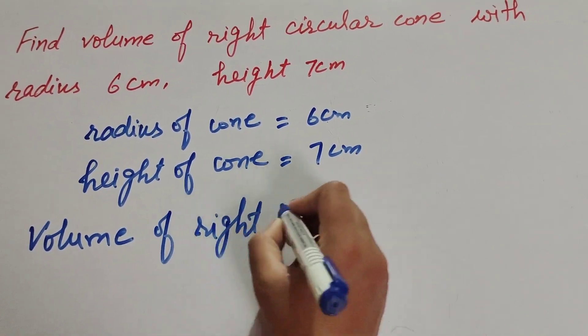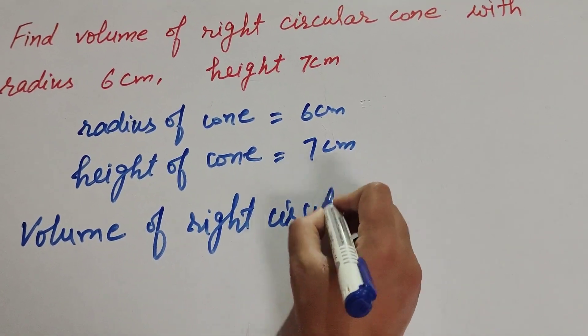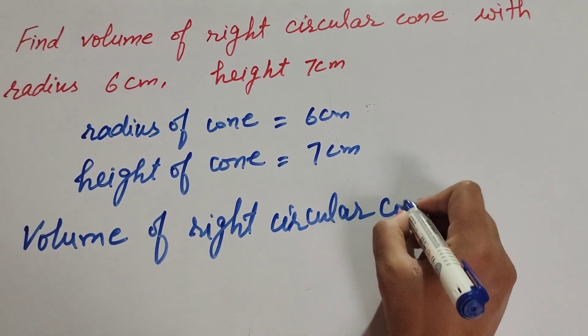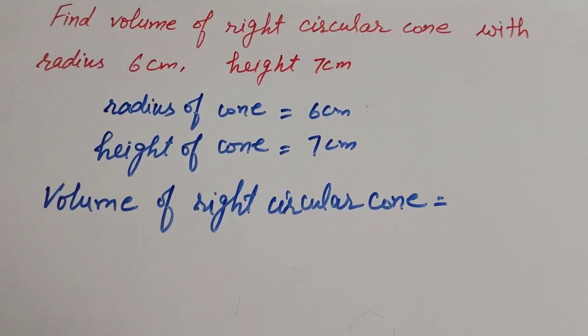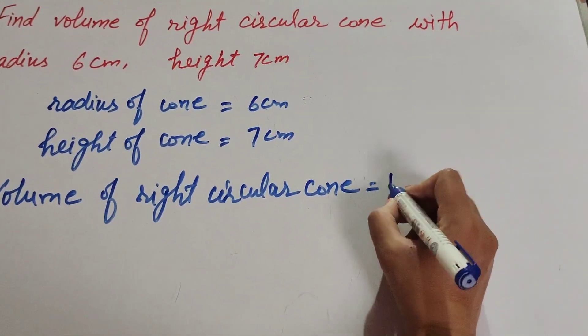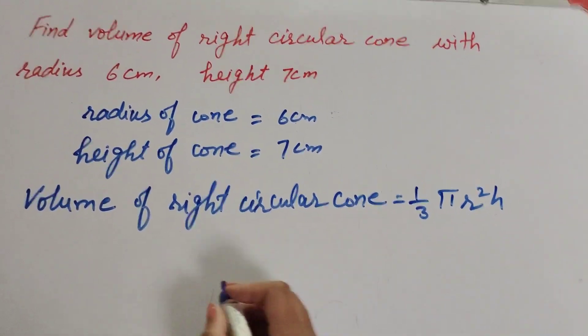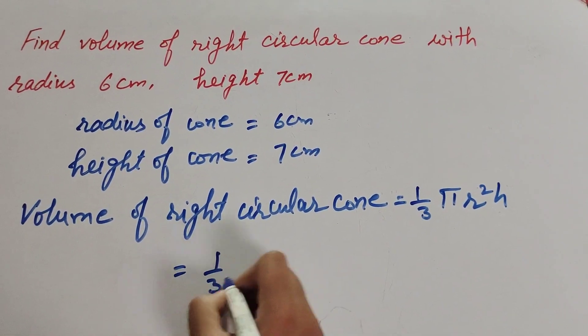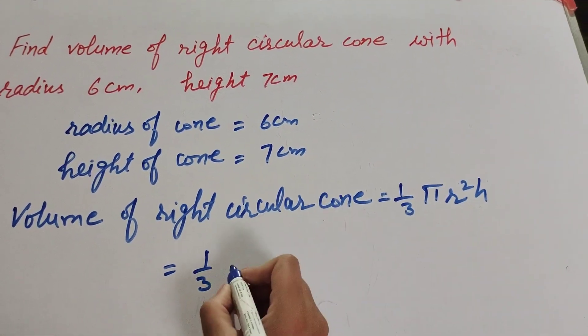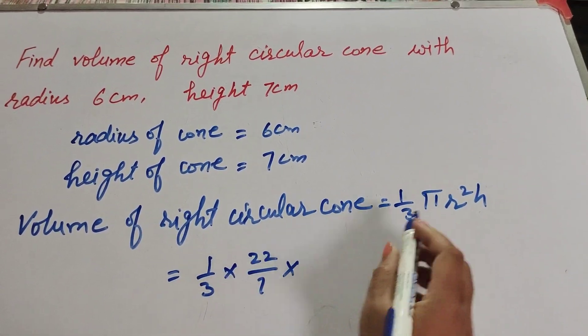circular cone - we know the formula to find volume of right circular cone is equal to 1/3 π r²h. This equals 1/3 times π (its value is the constant 22/7) times r